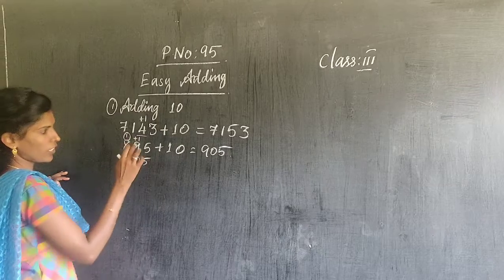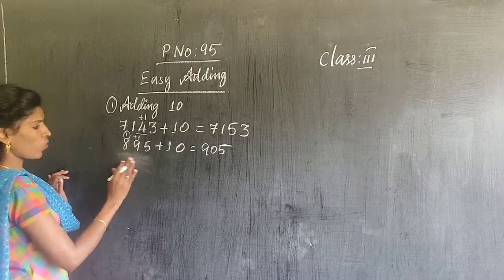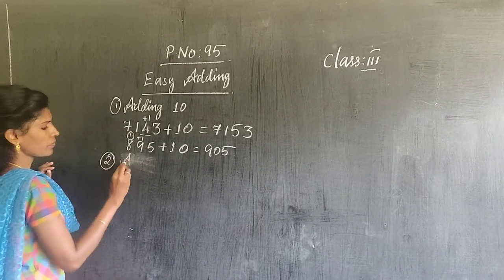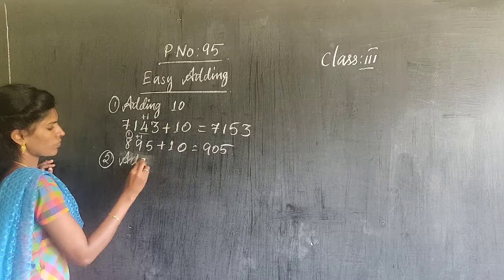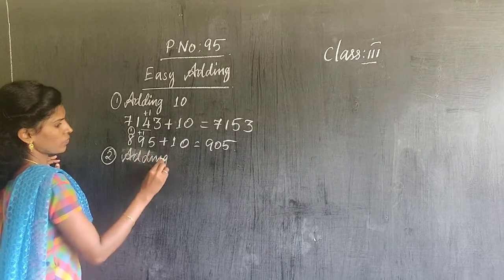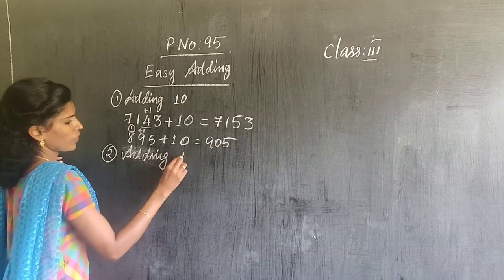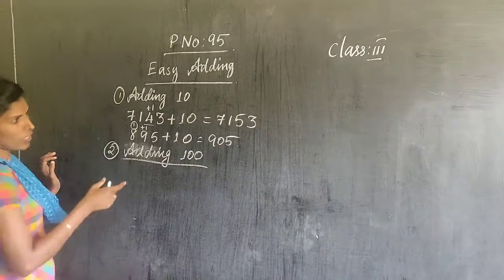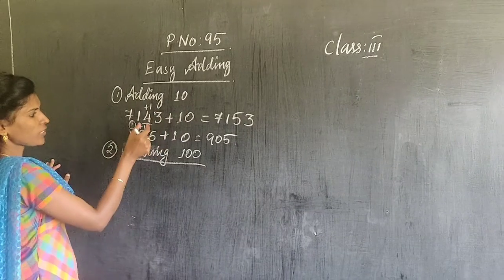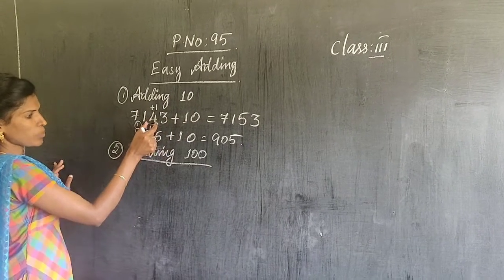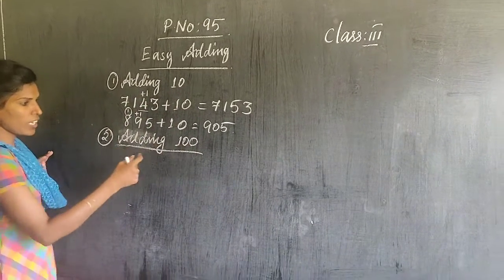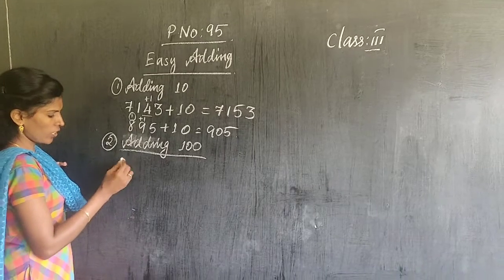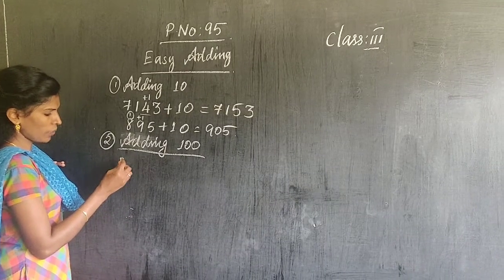To add 10, the tens place increases by 1. Now let's look at adding 100. Adding 100 means the hundreds place will be increased by 1. Let me give an example.